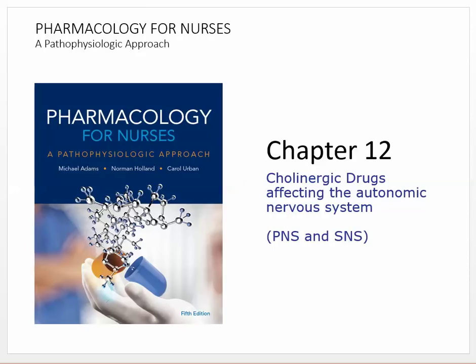This is chapter 12. We're going to be talking about cholinergic drugs affecting the autonomic nervous system. Chapter 12 is cholinergic, like acetylcholine, and chapter 13 is going to be norepinephrine.